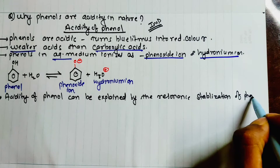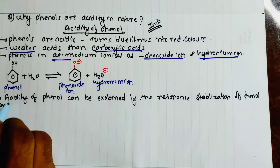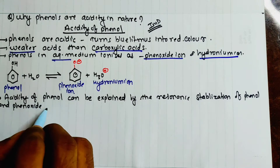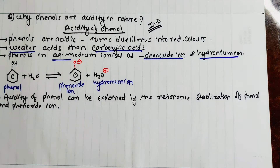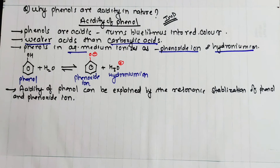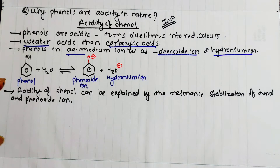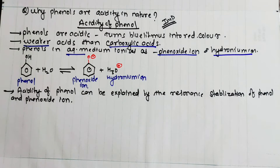Phenol and phenoxide ion — we can understand the acidity and acidic nature through resonance. Now we have the resonance structure. We can understand this; in the last class we had a video on this with a description of that.